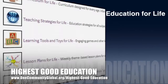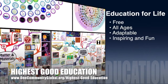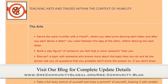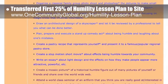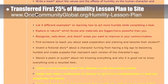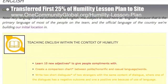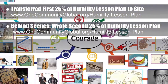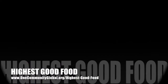One Community's approach to highest good education is open source and free shared, designed for all age groups, adaptable to any schooling environment, inspiring and fun for all participants, a learner-teacher collaborative, and includes U.S. Common Core standards. This week the core team transferred the first 25 percent of the written content for the humility lesson plan to the website. Behind the scenes, we wrote the second 25 percent of the written part of the humility lesson plan and completed the second 25 percent of the mind map of the courage lesson plan, bringing it to 50 percent complete.